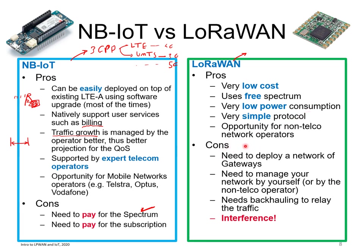The drawbacks of LoRaWAN are that you need to deploy a network of gateways — physically installing additional infrastructure. If deploying it yourself as an end user, you have to manage the network, which is not easy when you reach hundreds of gateways requiring monitoring and maintenance. You also need a backhaul connection: the LoRaWAN tower handles device access, but data must be relayed to a central system. This relay is most commonly done via 4G. So you still rely on a cellular network for backhaul, while the access side uses LoRaWAN.